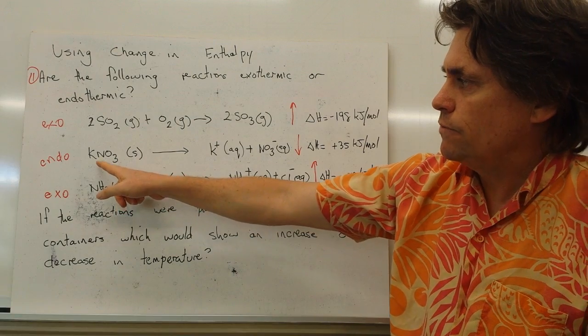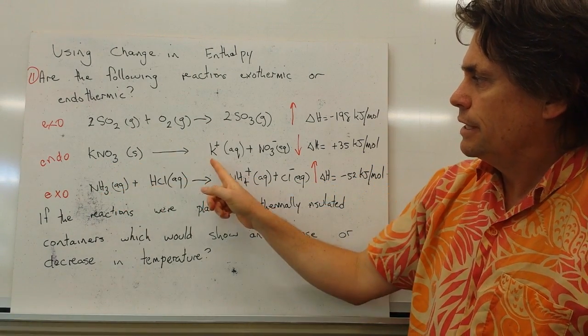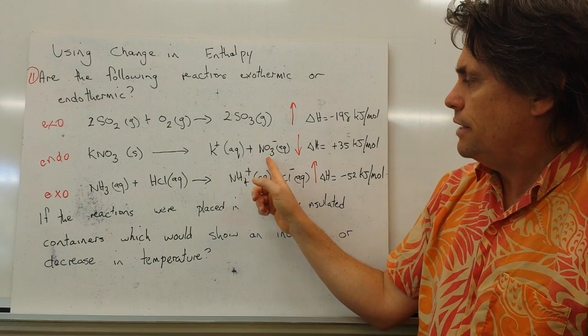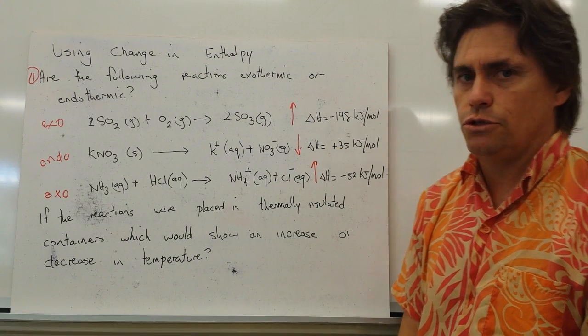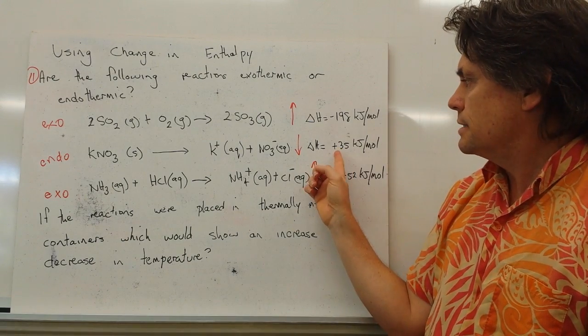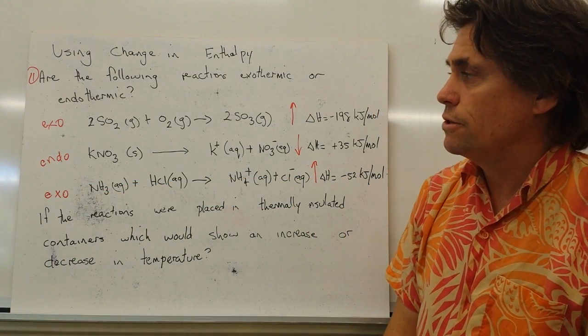In our second equation, we've got sodium nitrate dissolving in solution, solid giving us potassium ions and nitrate ions. In this case, our delta H value is plus 35 kilojoules per mole. That plus indicates that we have an endothermic reaction or an endothermic process.